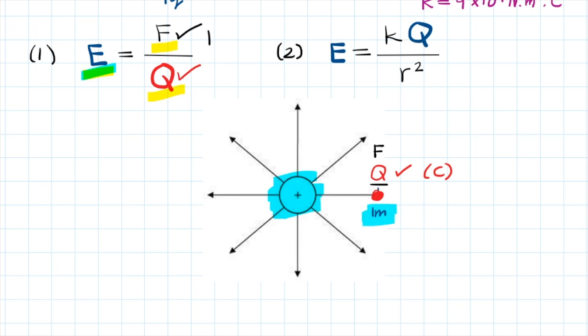Since force is measured in Newtons, and charge is measured in Coulomb, we say that the electric field strength is measured in Newtons per Coulomb. Although this is not the SI unit for electric field, it is the unit that we will use in grade 11 and in grade 12.